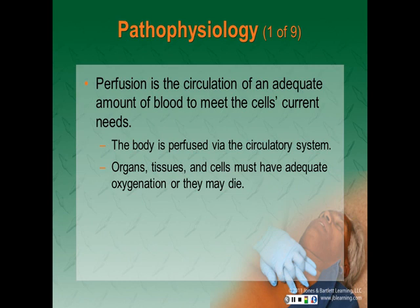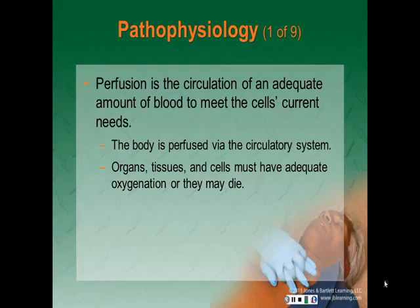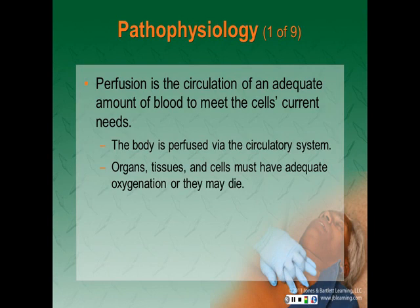Perfusion is an important part of the process by which waste products such as carbon dioxide made by the cells are then removed. Organs, tissues, and cells must have adequate oxygenation or they may die. If oxygenated blood is not properly circulated, some of the cells and organs will not receive proper nutrients and this may possibly result in cellular death. Diffusion is a passive process in which molecules move from an area of higher concentration to an area of lower concentration. Oxygen molecules, for example, move from the alveoli into the blood, and carbon dioxide moves from the blood into the alveoli. If there is a disturbance in the transportation of carbon dioxide, dangerous waste products will build up in the cells and organs and this will lead to cell or organ death.